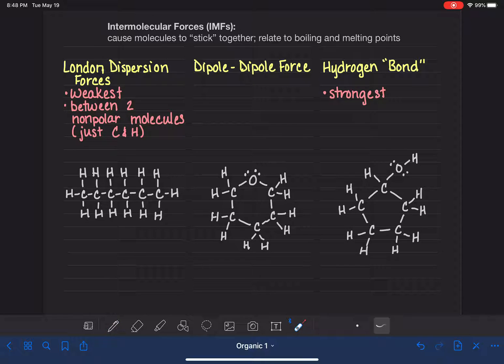So what you're looking at here, this is an example of a molecule because it's just carbons and hydrogens. This is an example of a molecule that would only experience London dispersion forces. So very weak intermolecular forces for this molecule.